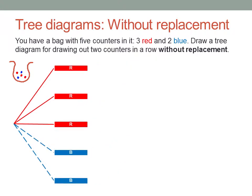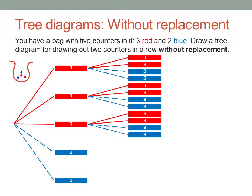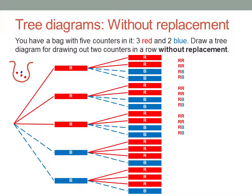Just think carefully through the available options at each point. If the first counter is red, then there are only two red counters left for the second draw. And if the first counter is blue, then there are three red counters left but only one blue counter left for the second draw. Working without replacement, the probability of getting two counters of the same colour is eight possible options out of twenty — a bit less than fifty percent.